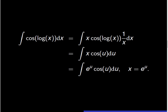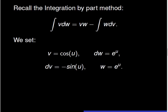In order to compute the integral of exponential of u times cosine of u du, we have to use the integration by parts method. We set v equal to cosine of u and dw equal to exponential of u. Thus, dv equals negative sine of u and w equals exponential of u.